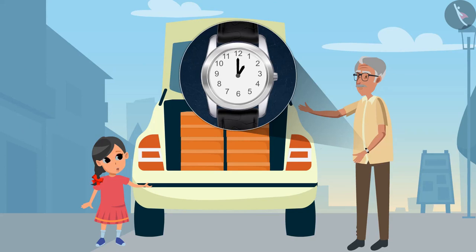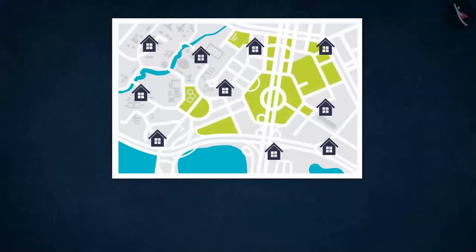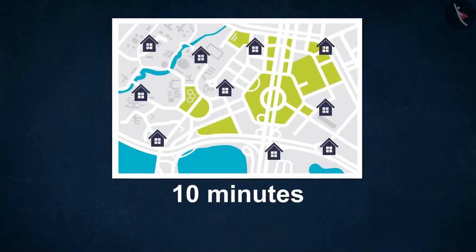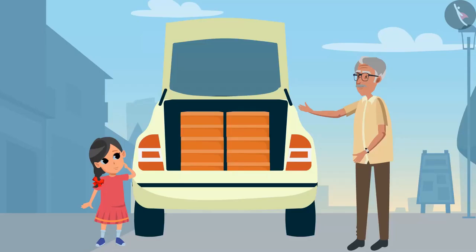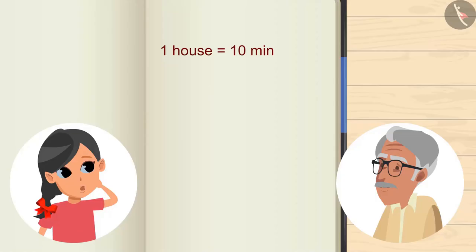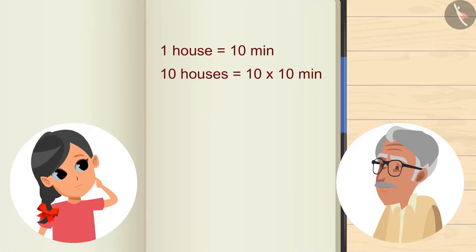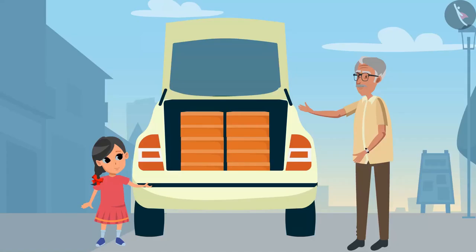Yes Grandpa, we get 1 again after 12 o'clock. Grandpa, how much time will each house take? Nearly 10 minutes. And we have to go to 10 houses. So 10 houses will take 10 minutes each — 10 multiplied by 10. It will take 100 minutes. And do you know how many hours are there in 100 minutes?